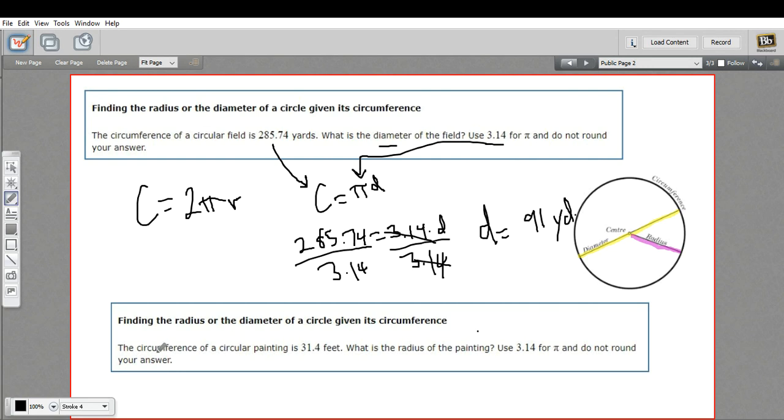Let's take a look at one more here. This one says the circumference of a circular painting is 31.4 feet. What's the radius of the painting? And don't round. So let's use this formula right here.